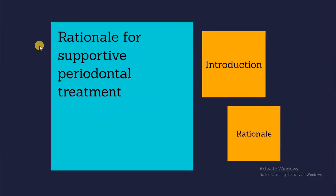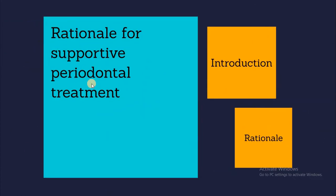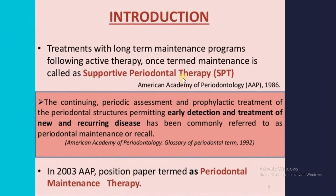Regarding the introduction, we talked about the rationale for supportive periodontal treatment. The rationale means the reasons that make us perform supportive periodontal treatment. Treatment with a long-term maintenance program following active therapy is called supportive periodontal therapy according to the American Academy of Periodontology. We need continuing periodic assessment and prophylactic treatment for the periodontal structures, which permits early detection and treatment of new and recurrent disease.